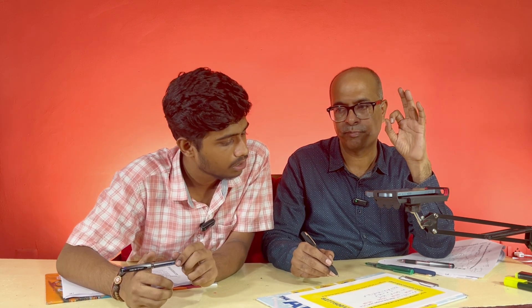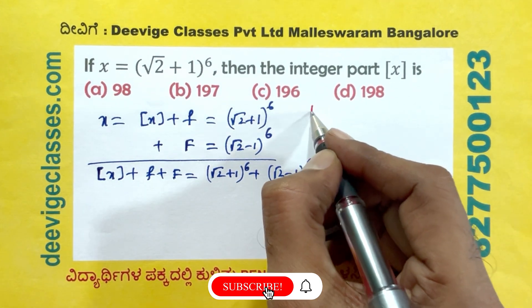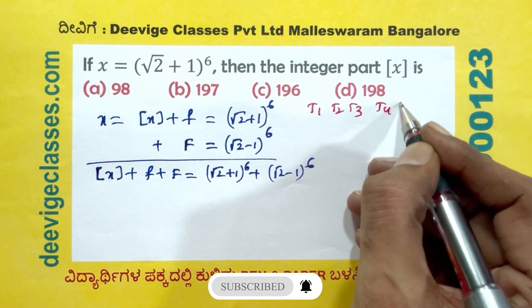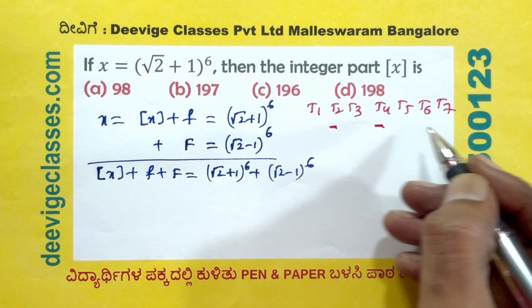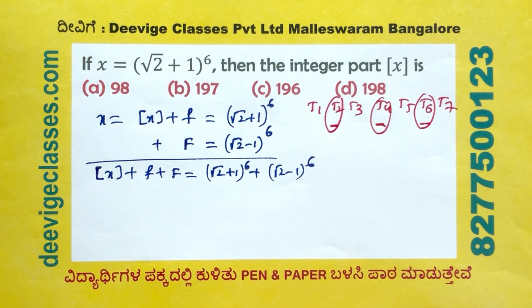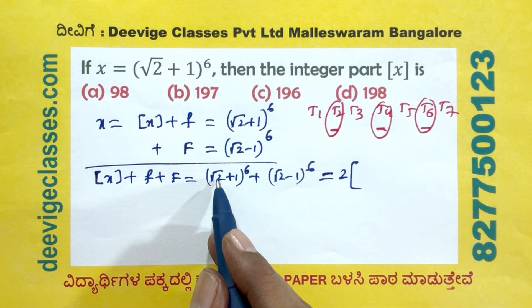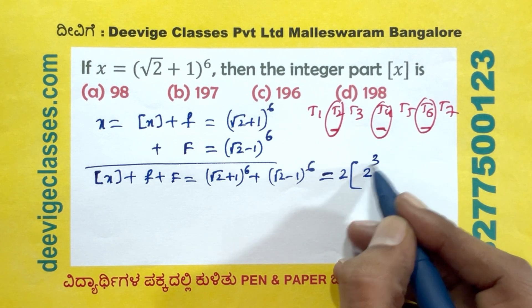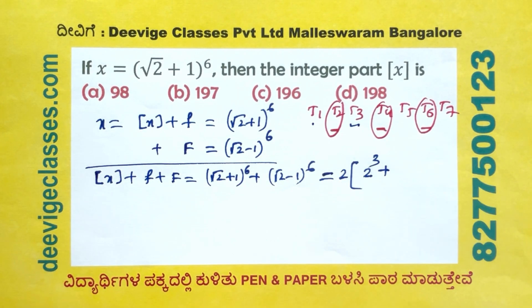For the expansion of root 2 plus 1 power 6 plus root 2 minus 1 power 6, since the index 6 is even, we take the even-numbered terms. With 6 terms total — T1, T2, T3, T4, T5, T6, T7 — the odd terms T1, T3, T5 add while T2, T4, T6 cancel, giving 2 times the sum of alternate terms using Pascal's triangle.